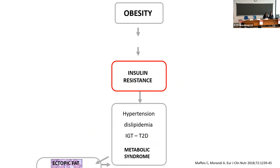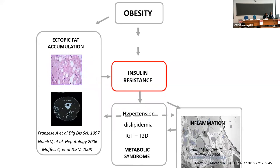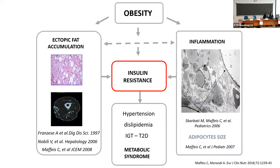Interestingly, there are two other factors that accelerate the process. One is ectopic fat accumulation, especially in the liver and skeletal muscle. When you increase your body weight and fat mass, you tend to increase fat accumulation in tissues not usually capable of storing fat, especially the liver. Another factor is low-grade inflammation.